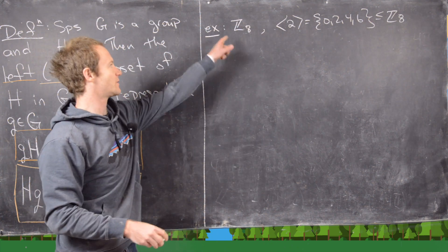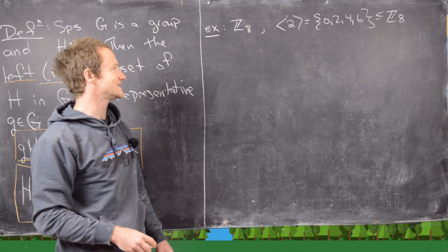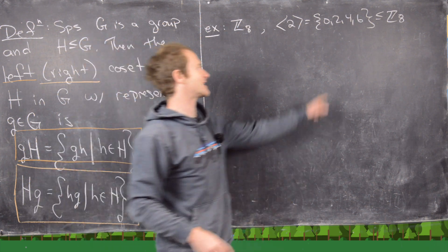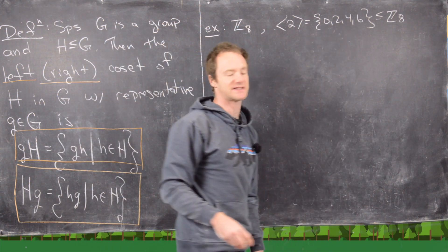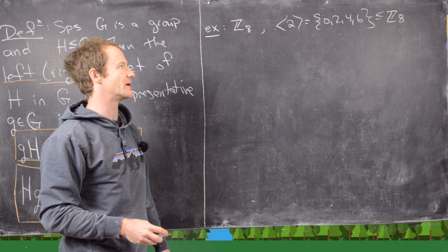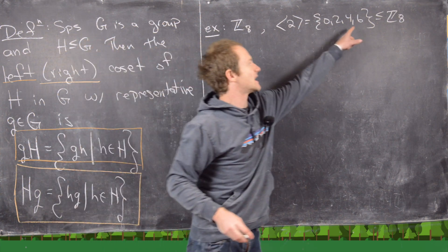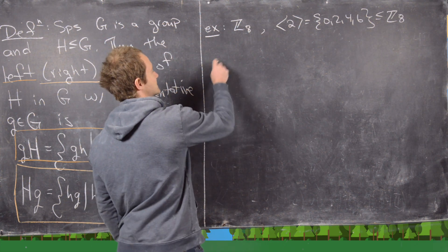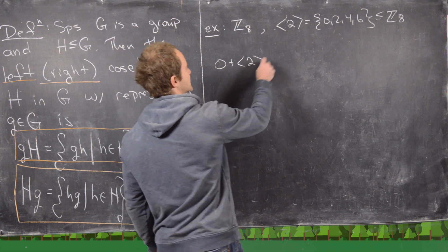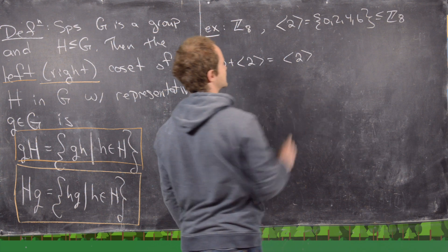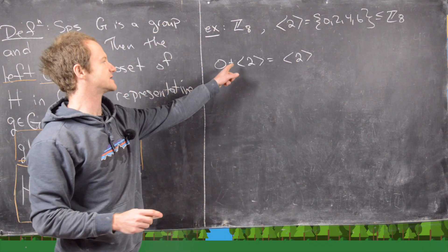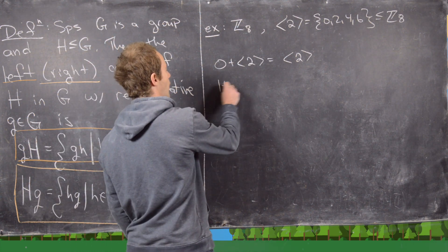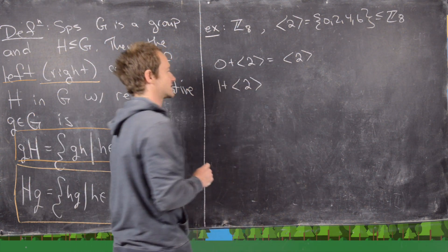For our next example, the group is Z8, and we look at the cyclic subgroup generated by 2, which gives us {0, 2, 4, 6}. Recall our addition is modulo 8, so 2 times 6 gives 8, which is 0. The coset 0 plus this cyclic subgroup is obviously just the cyclic subgroup itself, since we've just added 0 to every element.